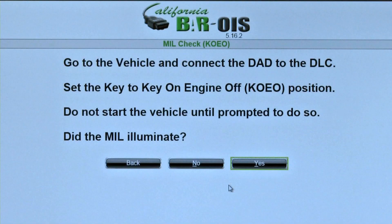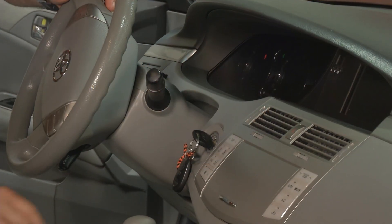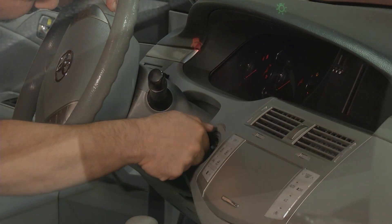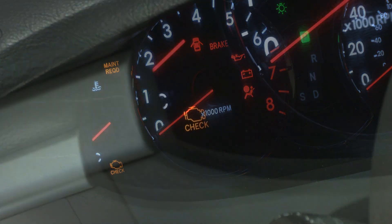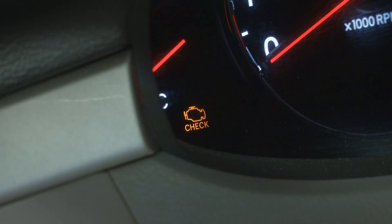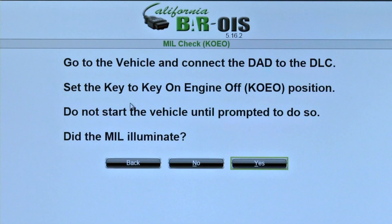At the MIL Check KoEO screen, the inspector enters whether or not the MIL is illuminated with the engine off. A passing vehicle will not have the MIL on at this point. A malfunction indicator lamp, or MIL, is turned on during key-on engine-off to show that the bulb is working. A properly functioning vehicle should turn on the MIL to show that the bulb is working. If working properly, click Yes. If the MIL doesn't come on, click No.